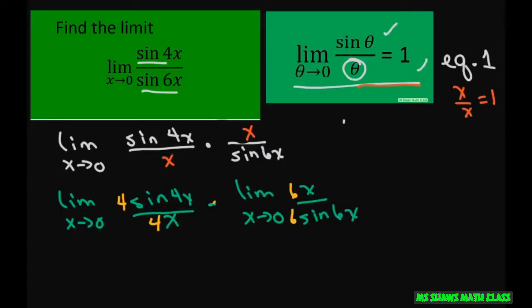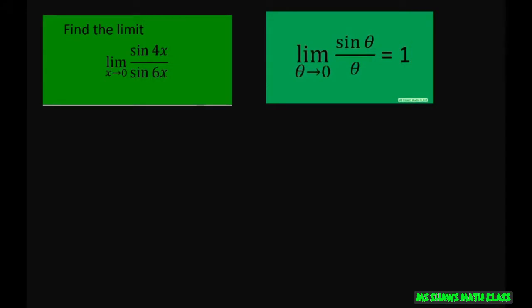Now, since we have that, I can pull out this 4. And when I pull out the 4, you'll see that this is going to give me this equation here. Because I can let theta equal 4X. So let's do that in the next slide. We're going to pull out the 4 and write this as 4 times the limit as X approaches 0 of sine of 4X divided by 4X.